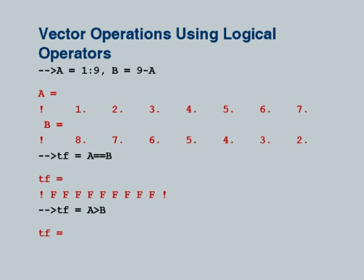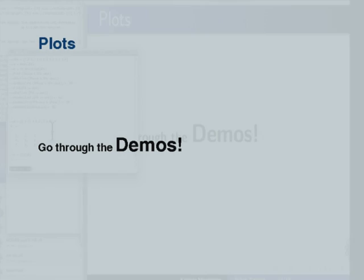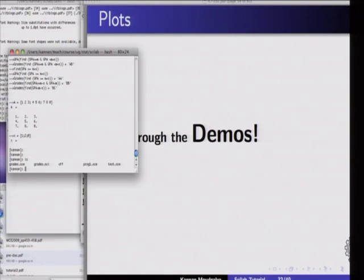Here for example, I have two variables A and B. I am comparing A and B. So it gives all of them to be false. A and B are nowhere equal. What will happen if I say tf equals A greater than B? What will be tf? A greater than B, it will be false, false, false, false. From here onwards it is true. So I would want you to try this. I will just refer you to one file and then I will post this file also in the website.